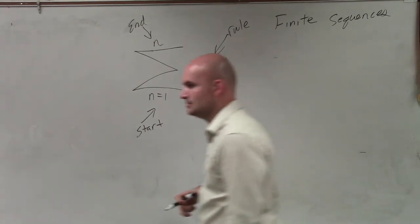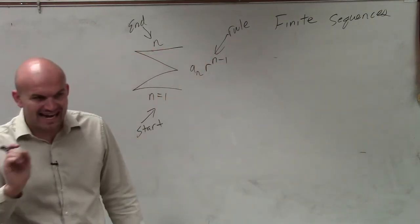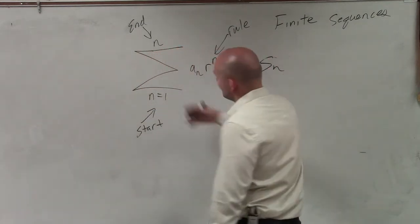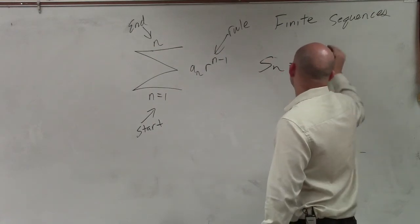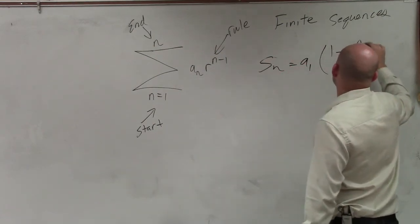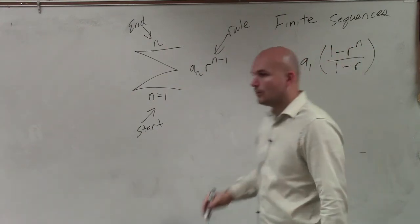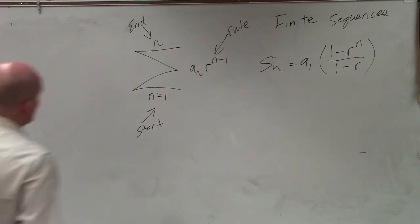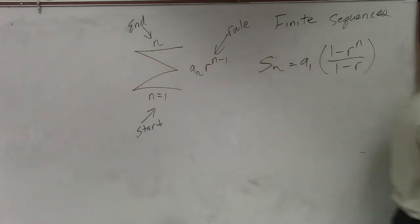Finite sequences. Here is the rule for the sum of a finite sequence: when you have a start, an end, and a rule, the sum is equal to a₁ times (1 minus r raised to the n), all over (1 minus r). Where r represents your ratio, n represents your number of terms, and a₁ is going to be your initial term. Let's go ahead and work through an example.